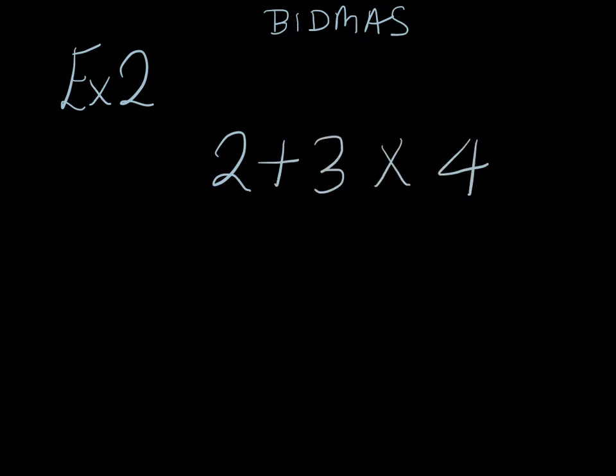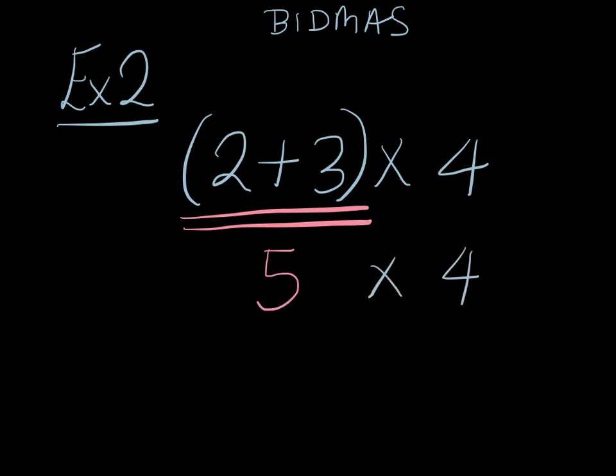Okay, next example. Example 2. We're going to have BIDMAS at the top here as usual. This time, we're going to do (2 + 3) × 4. Looks almost identical, but we've got brackets there. Now, BIDMAS says do the operation inside the brackets first. So this time, we're going to do the 2 + 3 first. And 2 + 3 is 5. And then we're going to multiply that by 4. And 5 × 4 is 20. And we're done. So that's example 2 done for us.